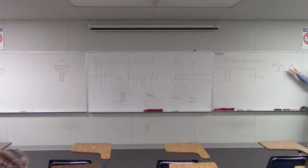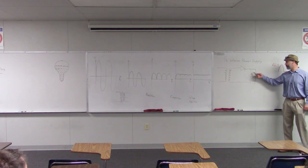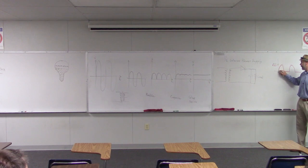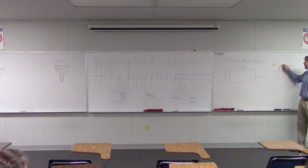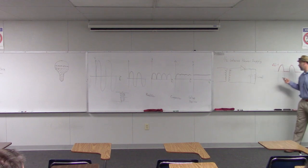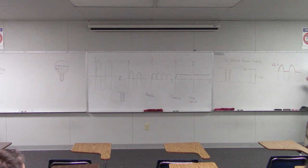We call this a half-wave power supply because it only captures the positive half of the incoming signal. If we put a capacitor in there to smooth things out, initially the capacitor charges up as the power goes up, then it slowly discharges when there's no incoming power, then charges up again and slowly discharges, and so on. You'd get an output signal that's a slowly rippling wave.